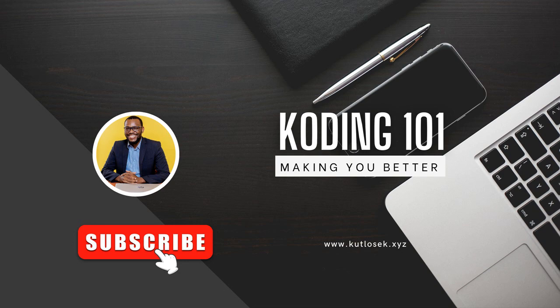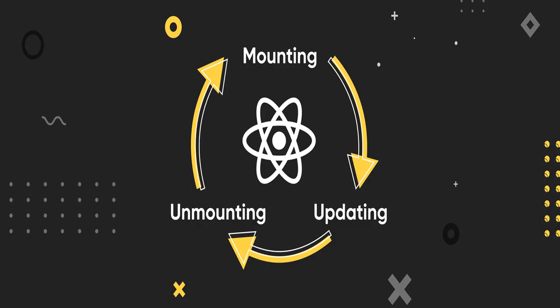Before we get into the UseEffect hook, there's one thing you need to understand, and that is the React component life cycle. The React component, just like a human being or an animal, has a life of its own. It has a birth stage, a growing or updating stage, and a time where it dies. It goes through three main stages: the mounting stage, the updating stage, and the unmounting stage. All these phases relate to the DOM, the document object model.